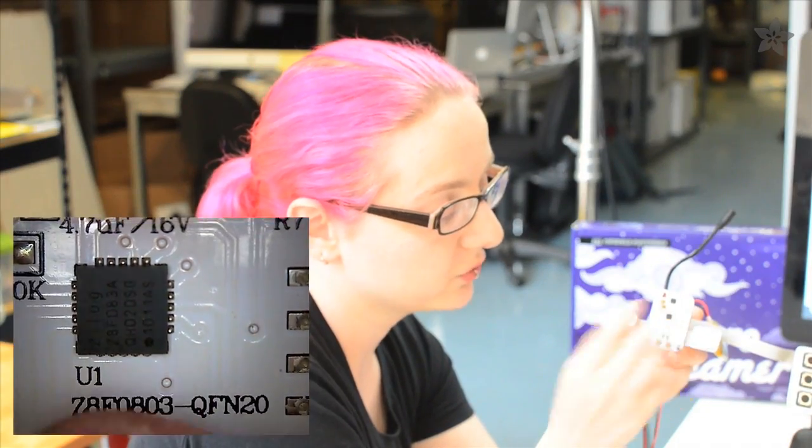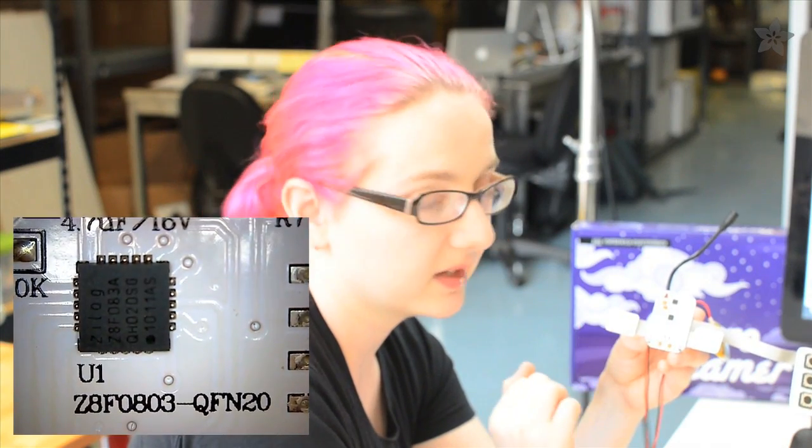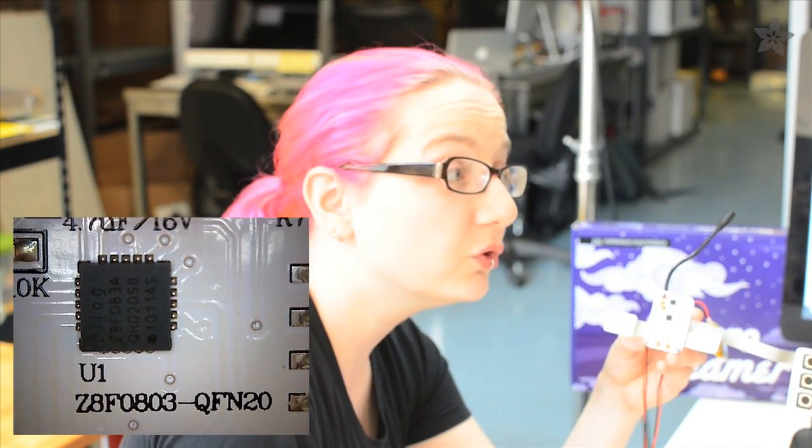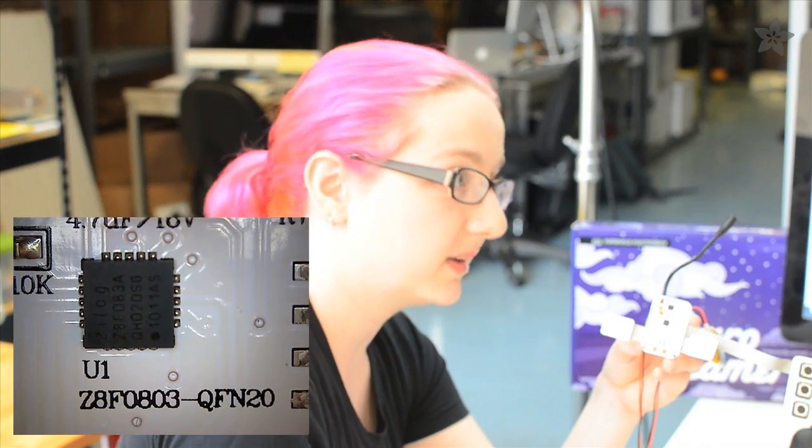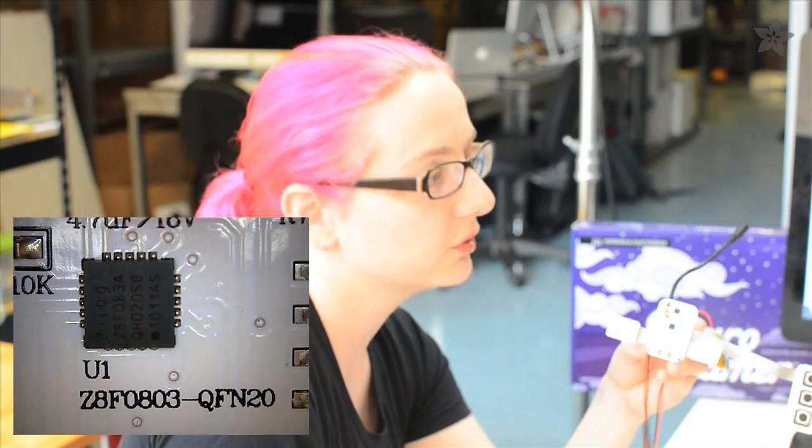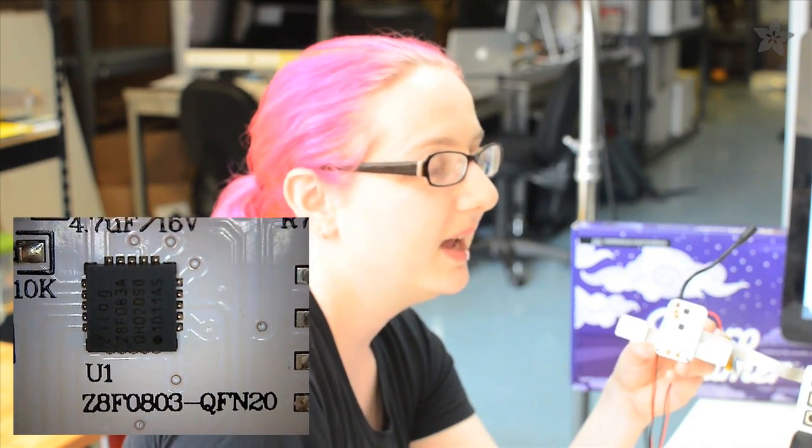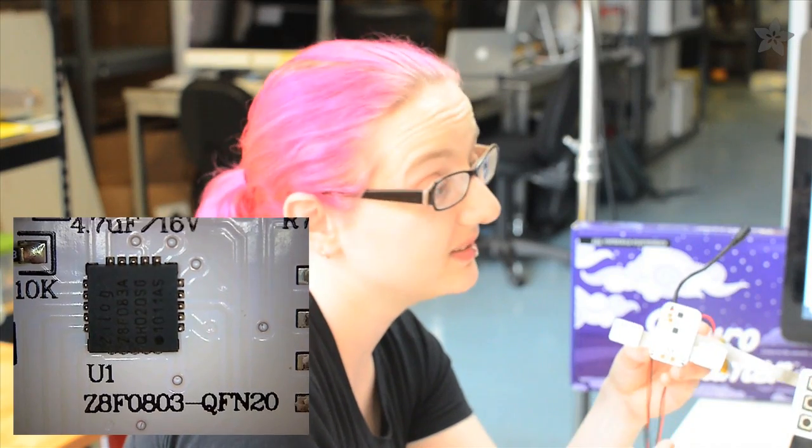Taking this apart, we've got the main board here. In the middle is a microcontroller. This is a Zilog 8-bit microcontroller. It's similar to an Arduino, but much less expensive. So when you're going to manufacture, if you're going to make 5,000 or 10,000, every dollar counts. These chips are like 50 cents, 25 cents.